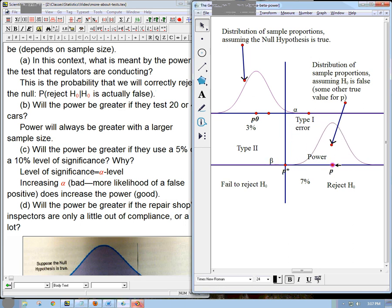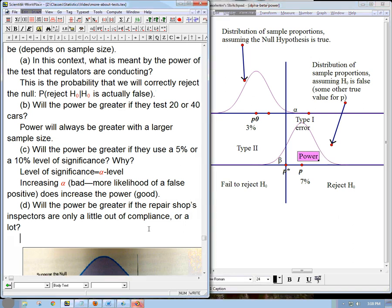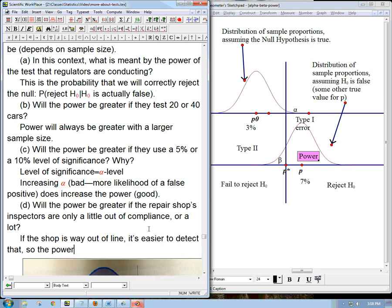Now, if, in fact, this repair shop is just way out of line, then I could have a super tiny alpha. The alpha could almost be zero, and yet I'm still going to have a good power. Now, that's pretty unlikely. You probably don't need statistics for that. It's probably pretty obvious at that point if it's that bad. But this is more likely, where it's pretty far out of line, and I've got alpha is small, and beta is not super small. Not super large either. So this says that if the shop is way out of line, it's easier to detect that, so the power is greater.